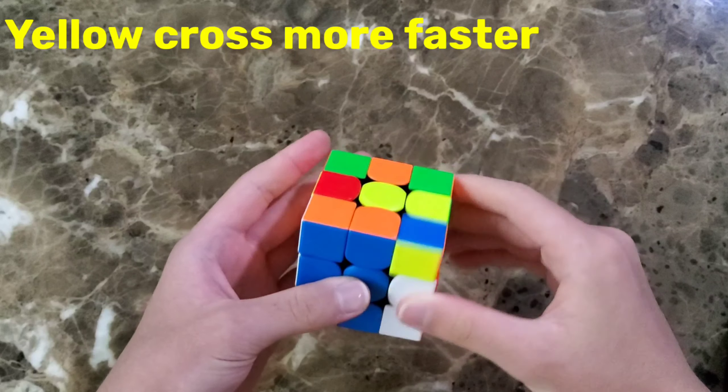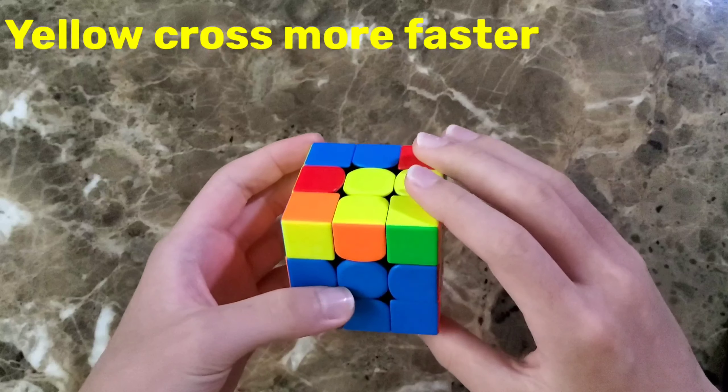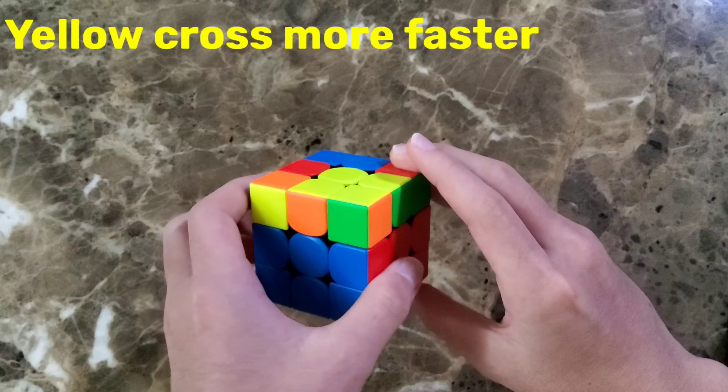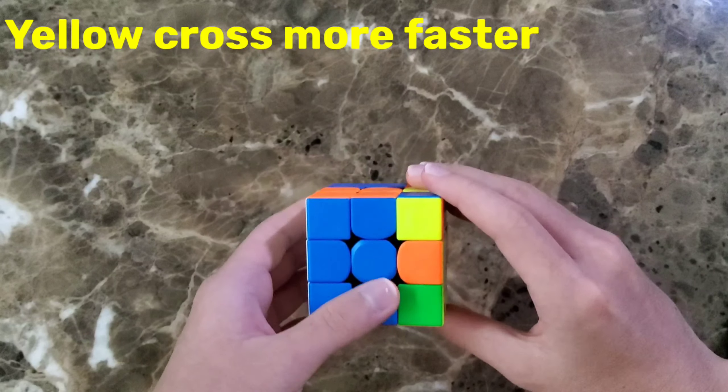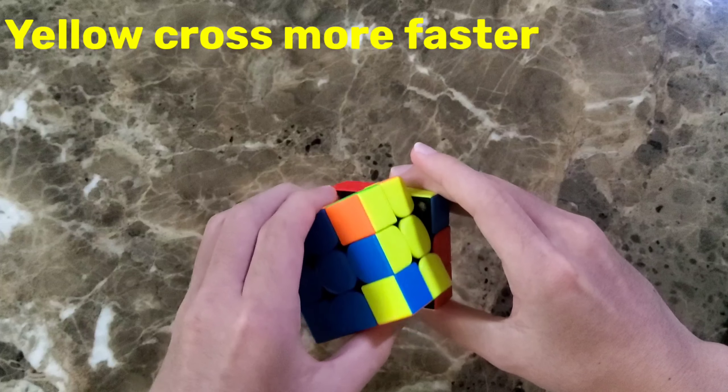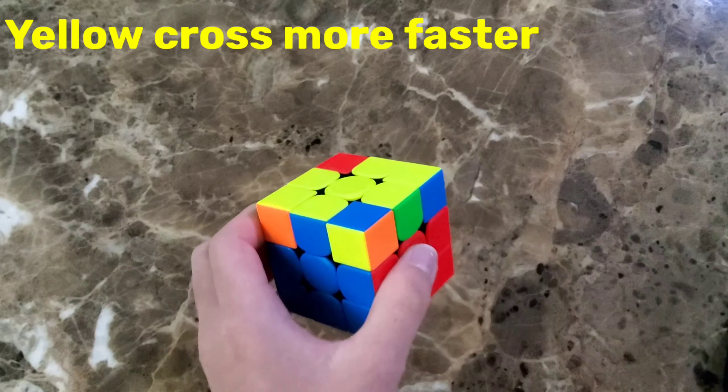First, you do the same algorithm as solving yellow cross. And then don't rotate the cube. And then turn these two things like this at the same time. And then do the twist. And then turn the two things again. And then the white cross is solved.